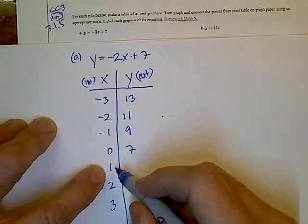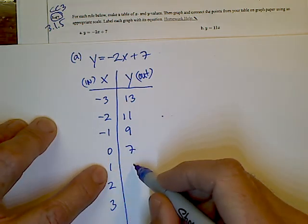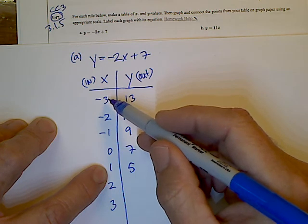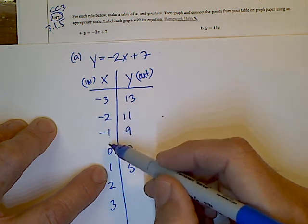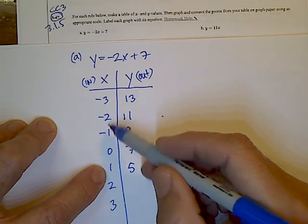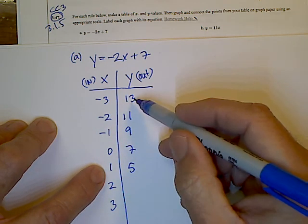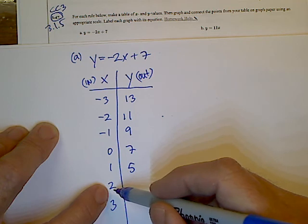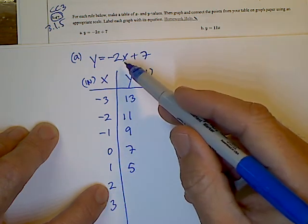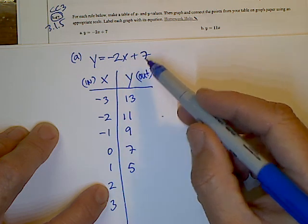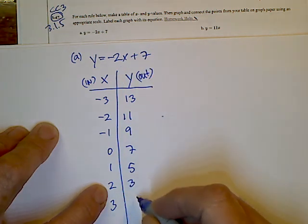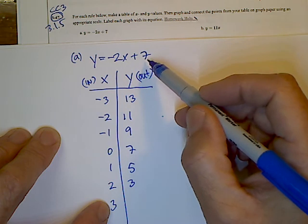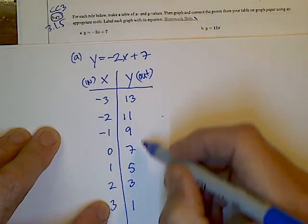You can already see the pattern here. So when I put in 1, you probably can predict it's going to be a 5, because it's decreasing by 2. Since I've done my x values in a consecutive order from negative 3 increasing by 1 up to 3, my y values are also going to have that pattern. And in this case, the pattern is decreasing by 2. So let's check this one. Putting in 2, negative 2 times 2 is negative 4, negative 4 plus 7, sure enough, it's 3. One more: 3, negative 2 times 3 is negative 6, negative 6 plus 7 is 1. And we see that pattern decreasing.